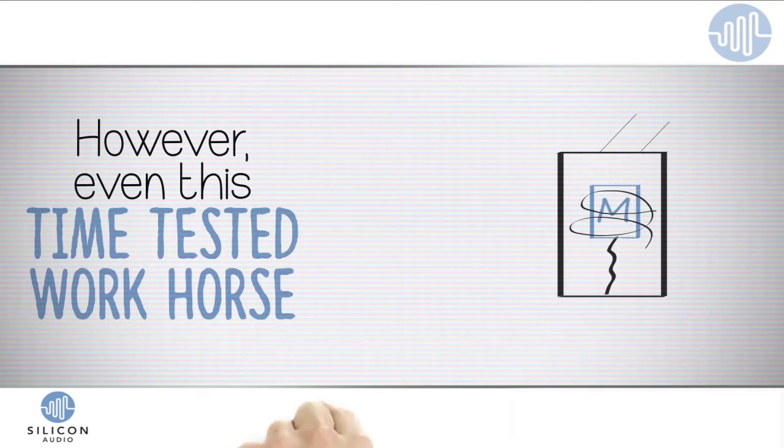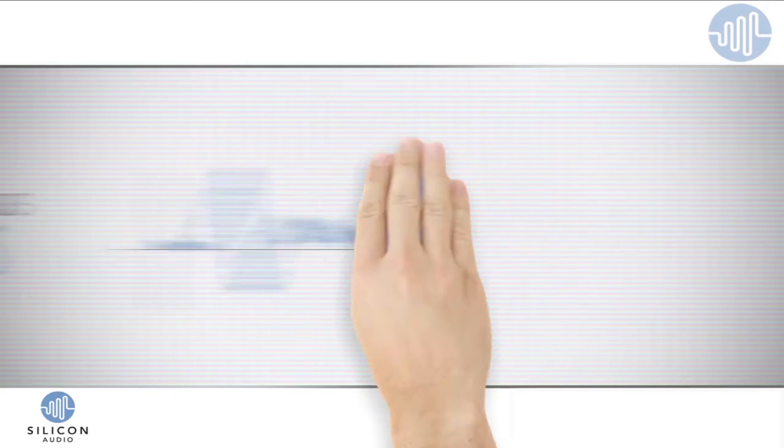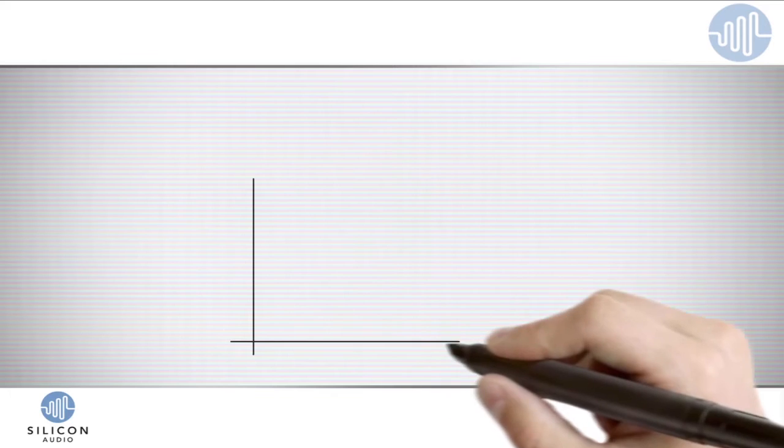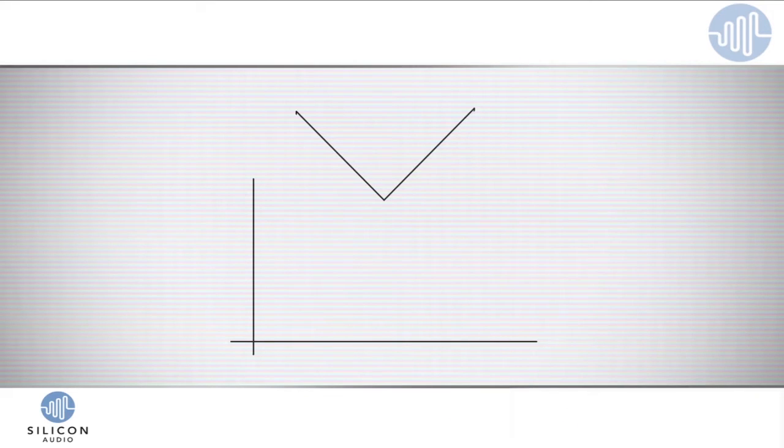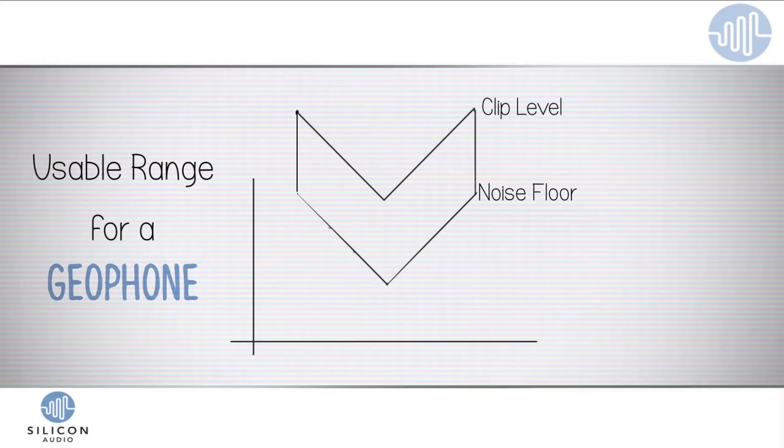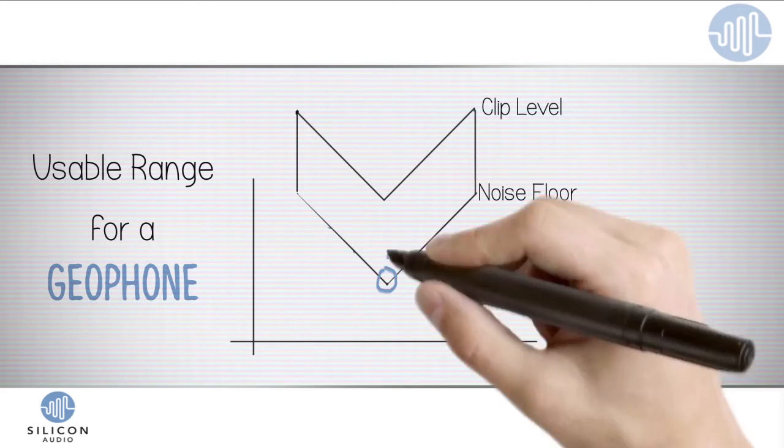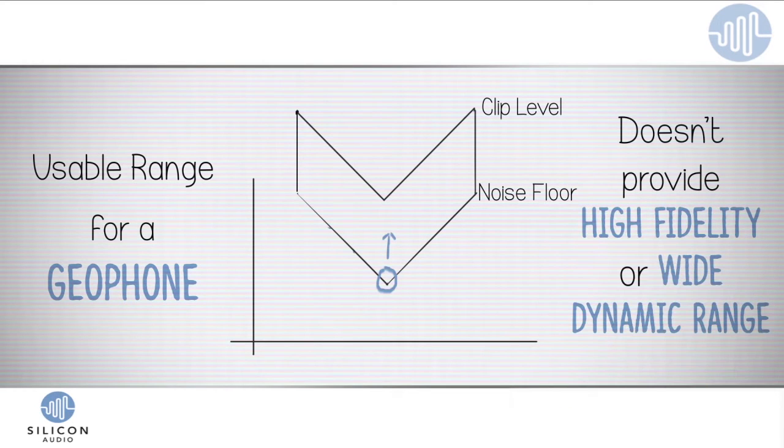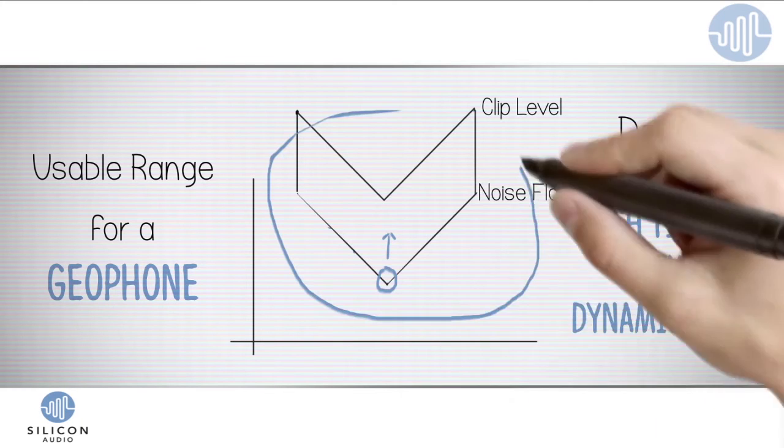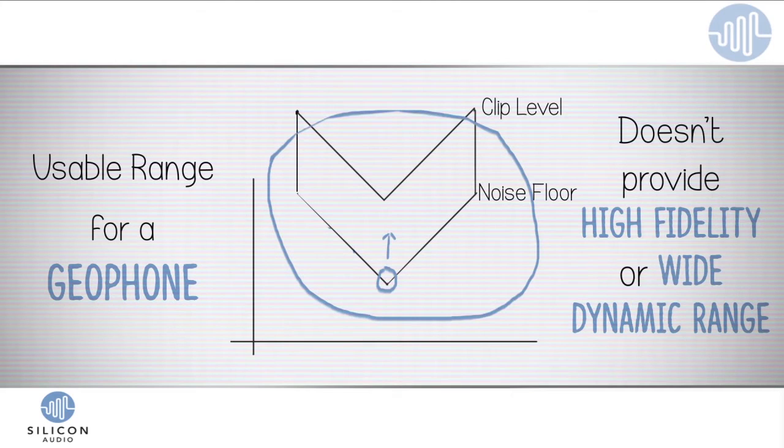However, this time-tested workhorse has some serious limitations. You see, geophone sensors have a limited response range that appears like a V when charted on a graph, like this. This line shows the clip level here, where the sensor becomes overloaded, and this line represents the noise floor, or lowest readable noise frequency. So here's the usable range for a geophone. A geophone is very sensitive at its resonant frequency, but in other frequencies, it tends to get noisier, and that doesn't provide high fidelity or a wide dynamic range in the data that you're trying to collect. This means you're effectively missing a large portion of the overall frequency spectrum. And that's not ideal.